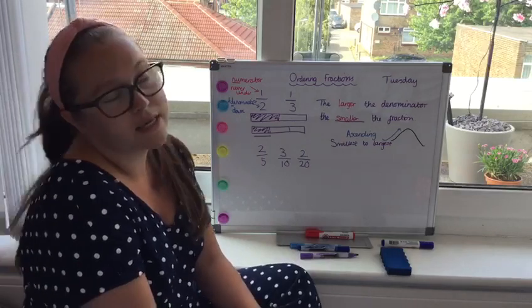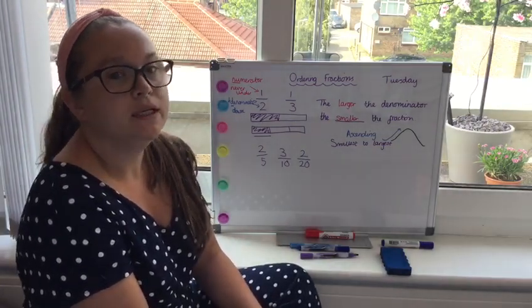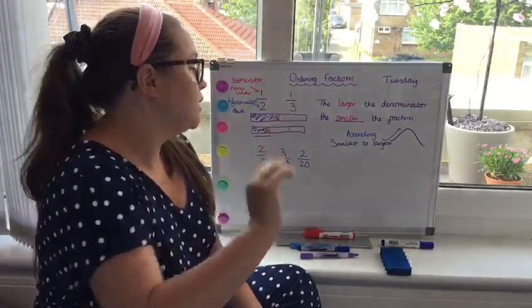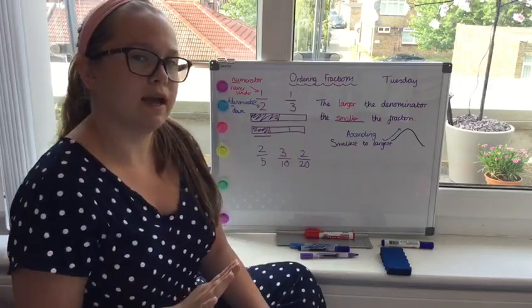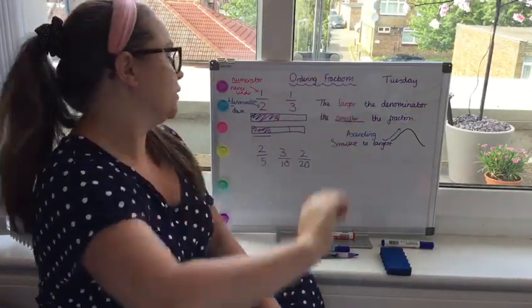So today we're going to think about ordering fractions in ascending order. Lots of you might remember me saying, ascending is going up. So it's from the smallest to the largest. Think of it as a roller coaster. You're going up, going up the roller coaster.